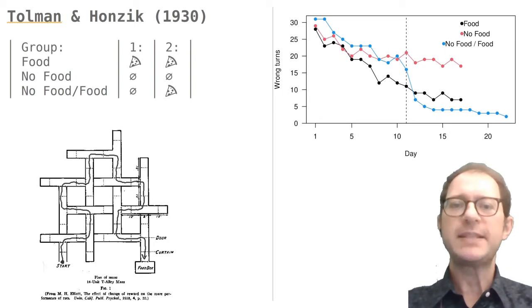During the first 10 days, they behaved exactly as the second group, as we would expect because neither group found food in the maze at this point.